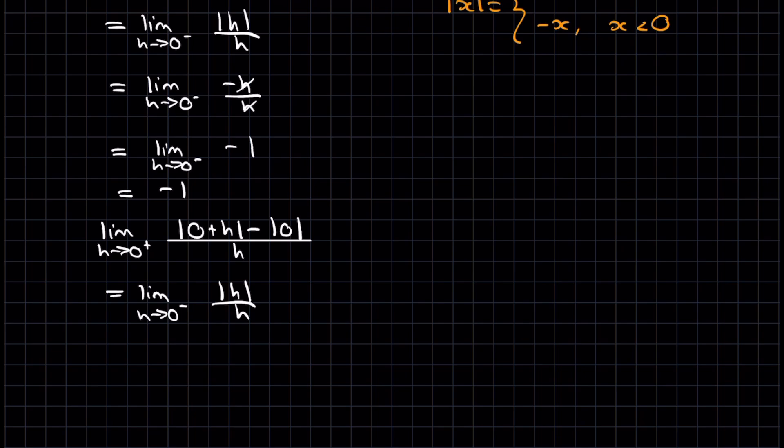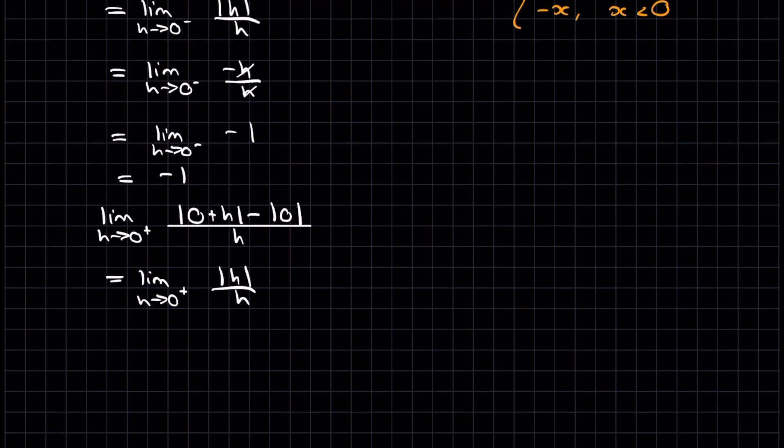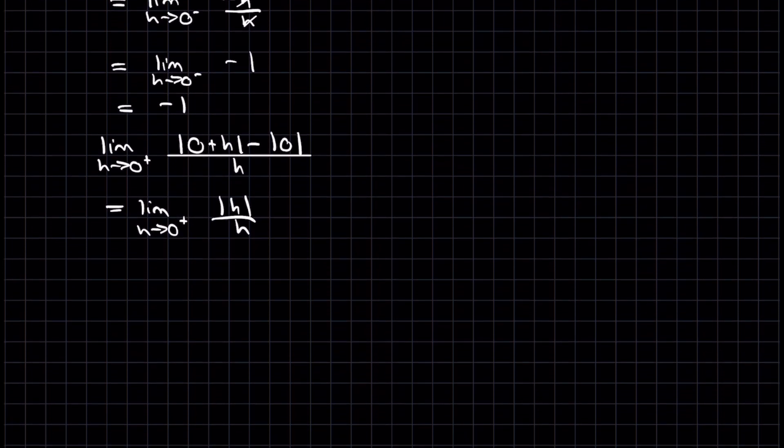But now, sorry, this should be a plus, not a minus. Now h is taking positive values, and it's coming towards 0 from the positive side. So this absolute value of h, that's going to be on the top branch up here. That's going to be equal to h. So that's equal to the limit as h approaches 0 from above of h on h. But that simplifies to 1.